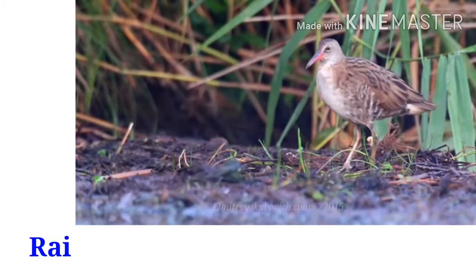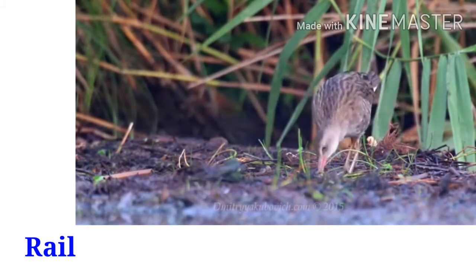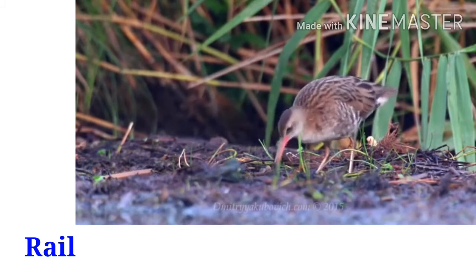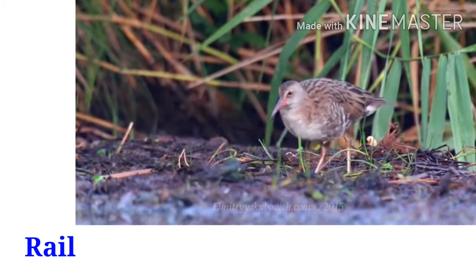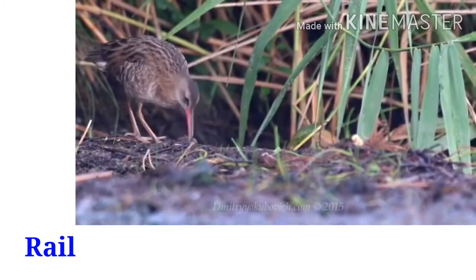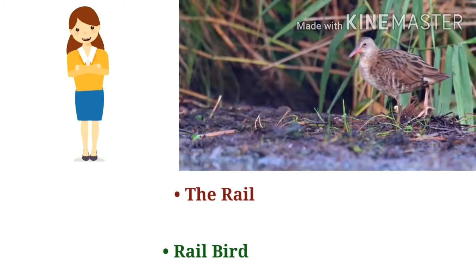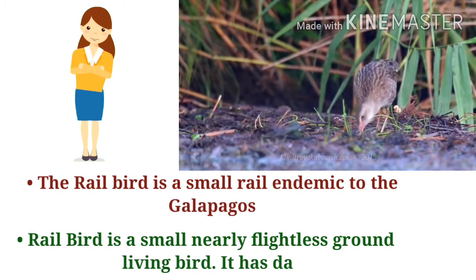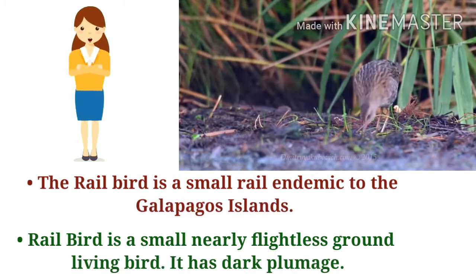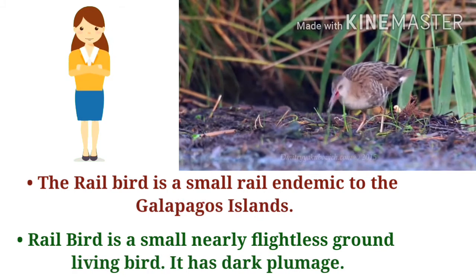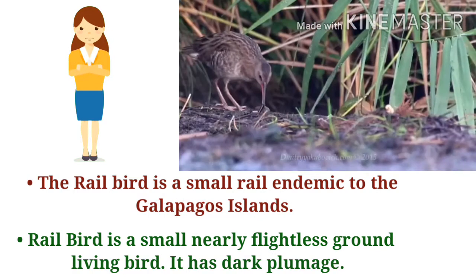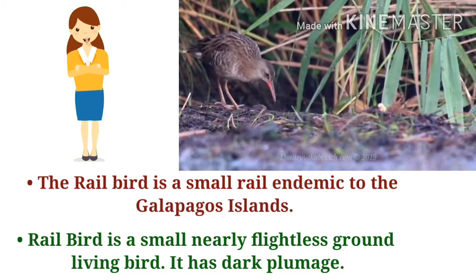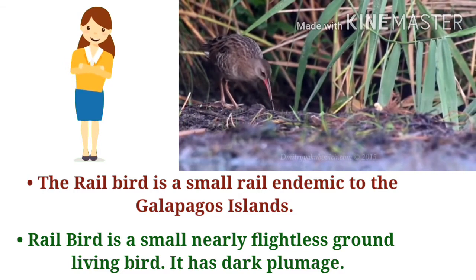Who is this? This is a rail. R-A-I-L. Let's introduce the rail. The railbird is a small rail endemic to the Galápagos Islands. It is a small, nearly flightless, ground-living bird with dark plumage.